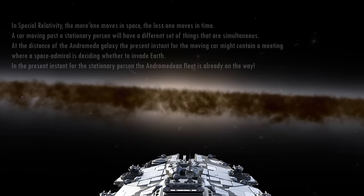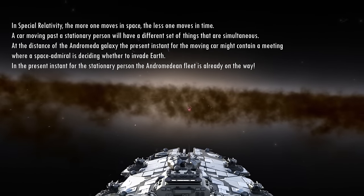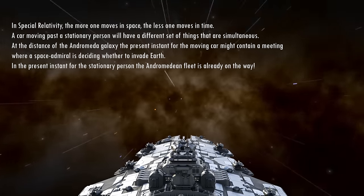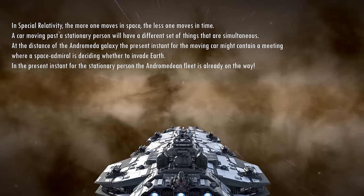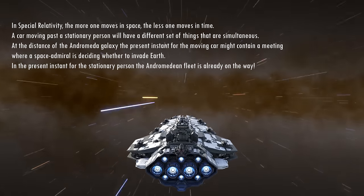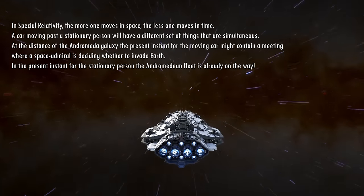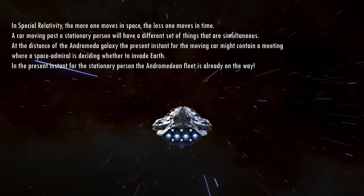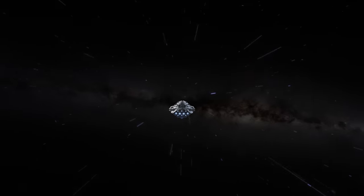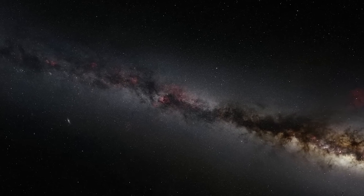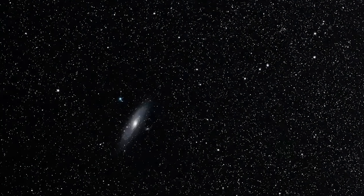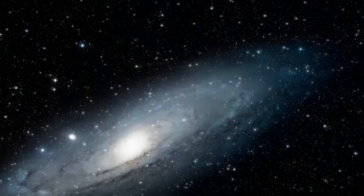This speculative consideration leads us back to the profound implications of relativity, highlighting that time isn't a universal constant that ticks away the same for everyone everywhere. Neither you nor your friend see what is happening in Andromeda because light from Andromeda will take 2.5 million years to reach Earth. The argument is not about what can be seen. It is purely about what events different observers consider to occur in the present moment.